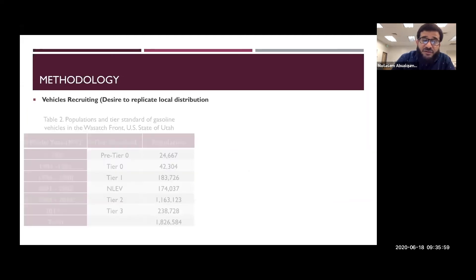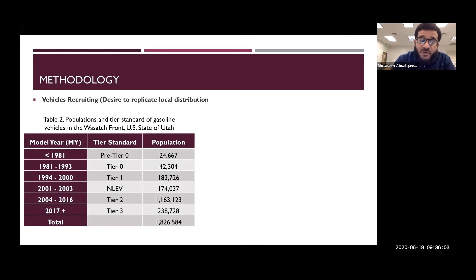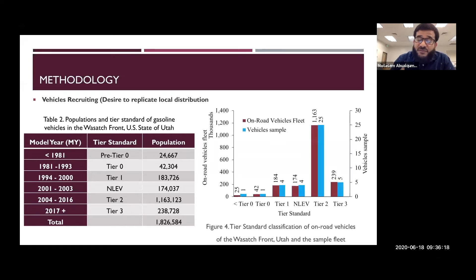For recruiting of vehicles, we tried to replicate the local distribution of the vehicles. First, we got the real population of the gasoline vehicles in the Wasatch Front and we classified them based on year and the tier standard. This is the end of the population. We tried to have the same tier standard for our sample as the on-road. The red bar shows the on-road vehicles, the fleet, and the blue bars show our vehicle sample. As you can see, we tried to have the same tier distribution in our sample as in the on-road fleet of the Wasatch Front, just to be more representative of the real world.